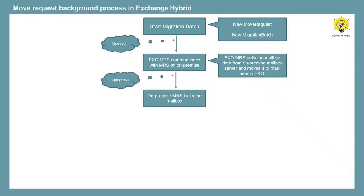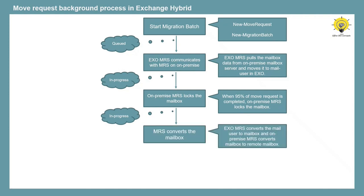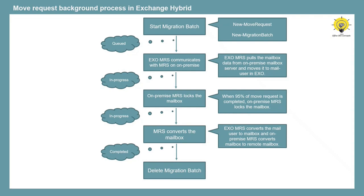When the move request is 95% completed, the on-premise Mailbox Replication Service locks the on-premise mailbox until final synchronization is completed — move request status is still In Progress. In step four, Exchange Online Mailbox Replication Service converts the mail-enabled mail user to a mailbox, and on-premise MRS converts the mailbox to a mail-enabled remote mailbox. The actual on-premise mailbox is soft-deleted, and the move request status shows Completed. In step five, the administrator deletes the migration batch from Exchange Online, and the move request information is cleared from Active Directory and from the system mailbox.